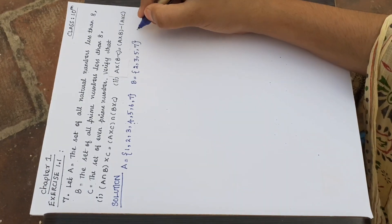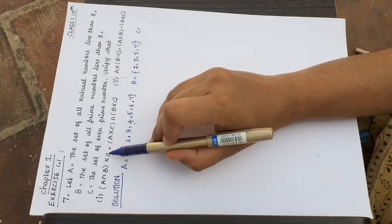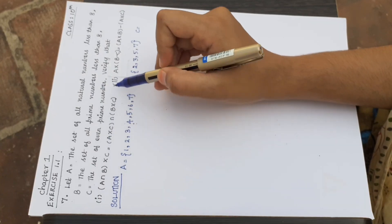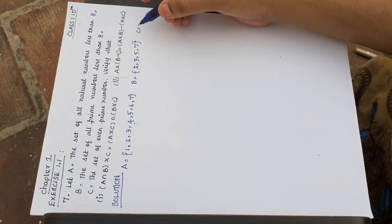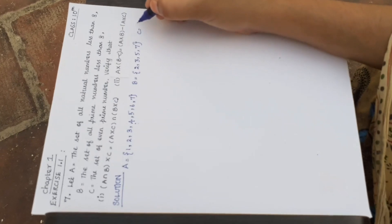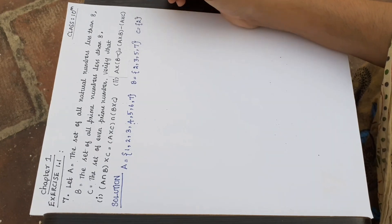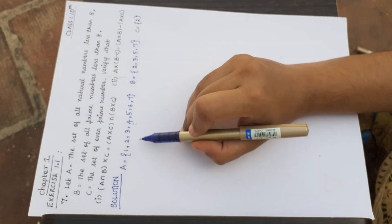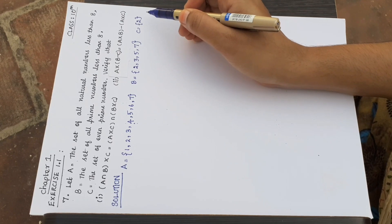Then C is equal to the set of even prime numbers. So the even prime number is 2. This gives us our sets A, B, and C.